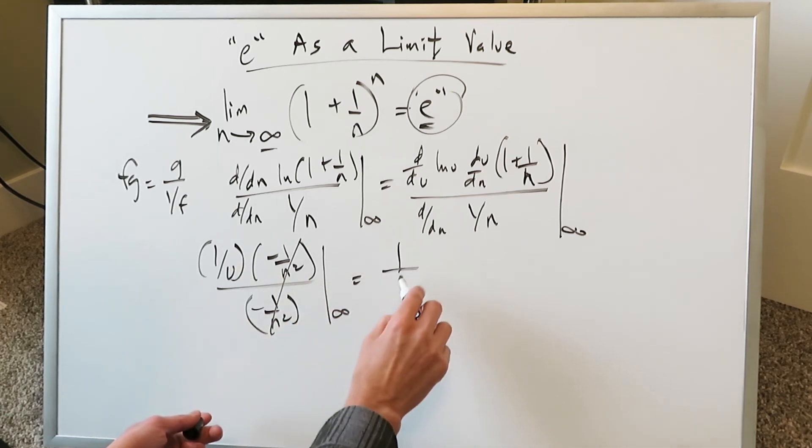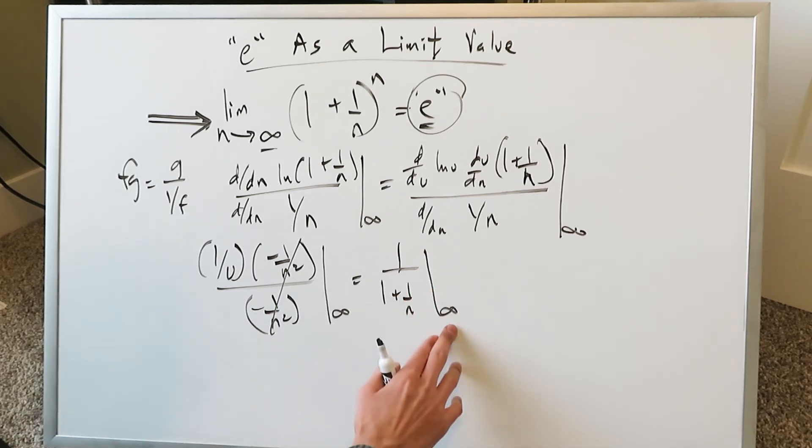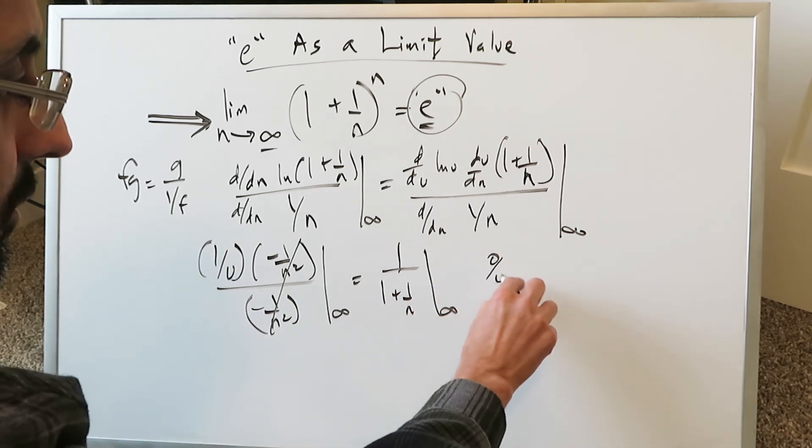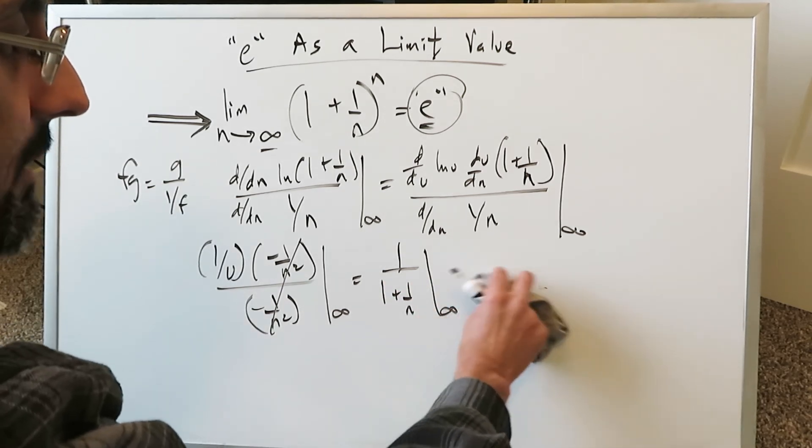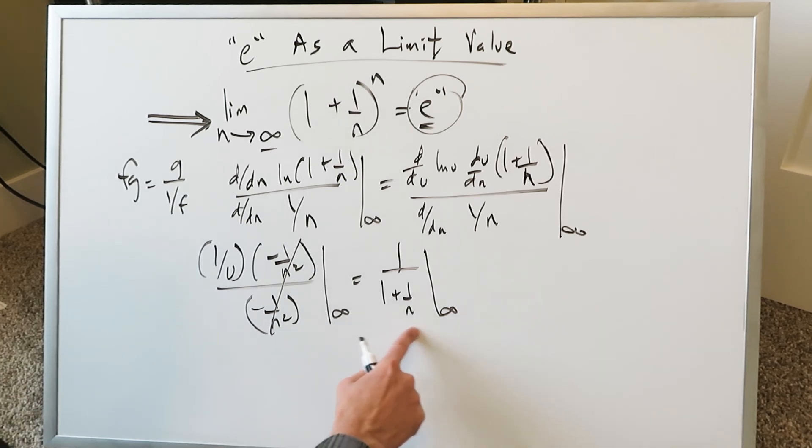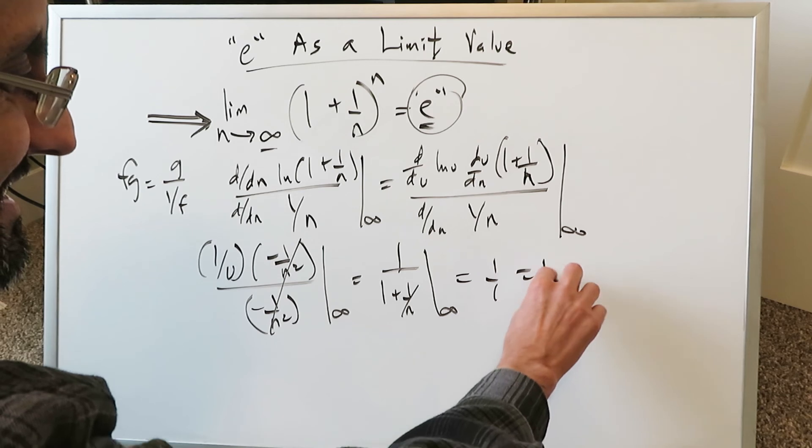1 over u, resubstitute u. You have 1 over 1 plus 1 over n. You can apply the infinity. If the 0 over 0 or infinity over infinity, the basic indeterminate forms exist, you would do another round of L'Hopital's rule procedure but that won't be the case. When you apply infinity here in places of n, this zeroes out. You end up just getting 1 over 1 which is just a 1.